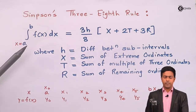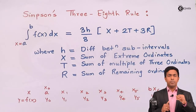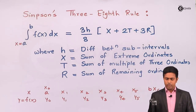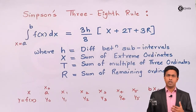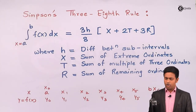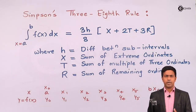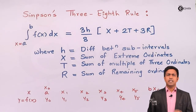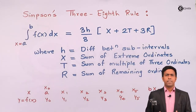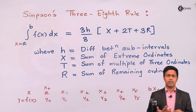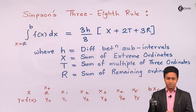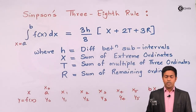Before using this rule, there is one mandatory condition: whenever we are taking the intervals, the number of intervals must be a multiple of three. To remember this easily: the last ordinate's index must be a multiple of three. As we have y6 here, and 6 is a multiple of 3, it is accepted. We can also have y3, y9, y12, or y15 as the last ordinate — all multiples of 3.